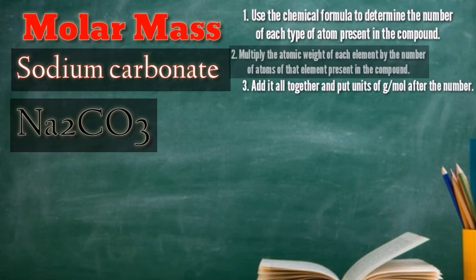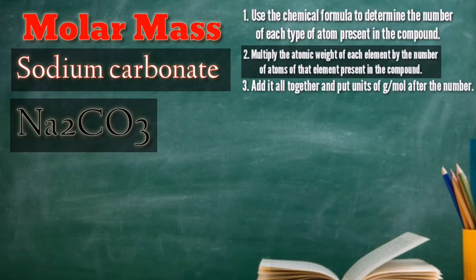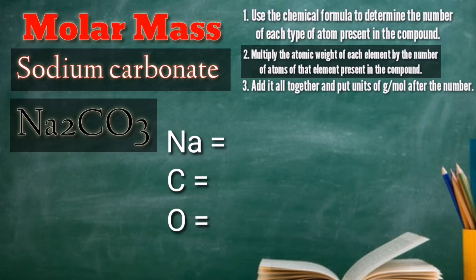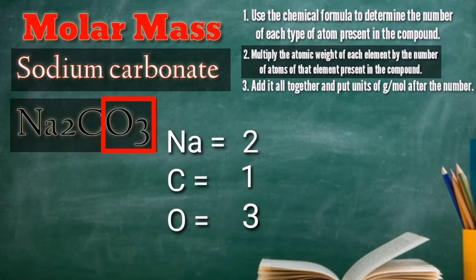Then, multiply the atomic weight of each element by the number of atoms of that element present in the compound. In the compound, we have two atoms of sodium, one atom of carbon, and three atoms of oxygen. We are going to multiply each by its atomic weight as shown in the periodic table.